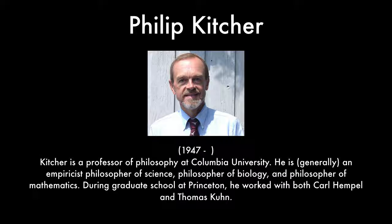One of the leading contemporary accounts of the notion of scientific explanation is known as the unificatory account. One of the main defenders of the unificatory account is Philip Kitcher, a professor of philosophy at Columbia. He's generally an empiricist philosopher of science, philosopher of biology, and philosopher of mathematics. During graduate school at Princeton, Kitcher worked with and was influenced by both Carl Hempel and Thomas Kuhn, two other influential philosophers of science.